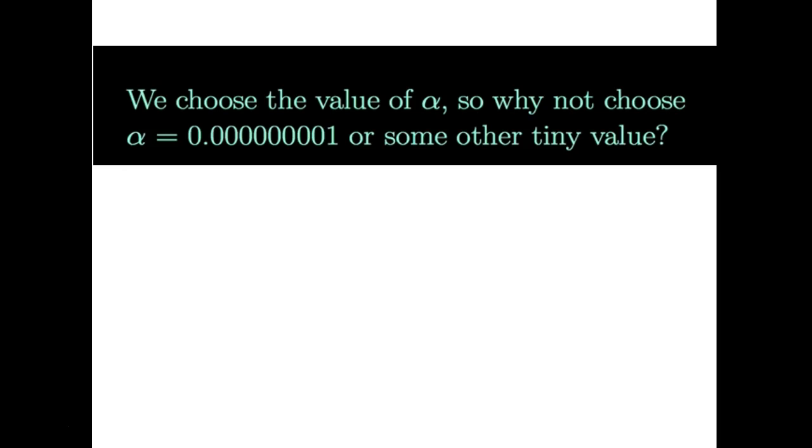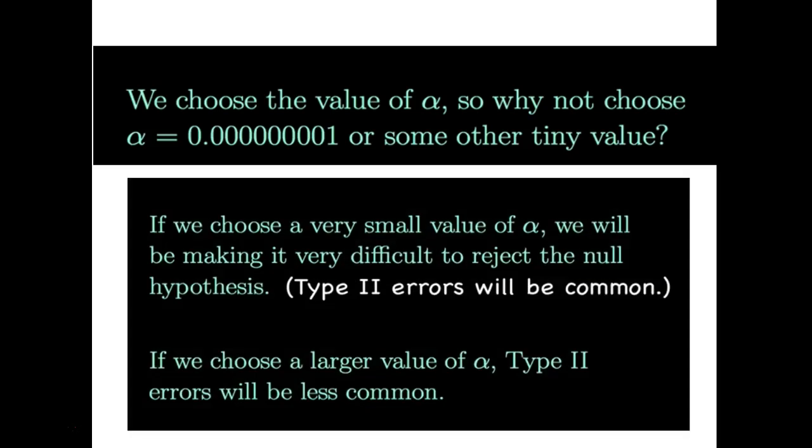The only problem is the smaller alpha gets, the less chance you have of incorrectly rejecting the null hypothesis, but the bigger chance you have of doing what's called a Type II error. So that means that there's a chance that you could then say the proof for guilt is so high that you basically just let every single person walk away and so no one is ever proven guilty and everyone is always innocent even those who actually are guilty.